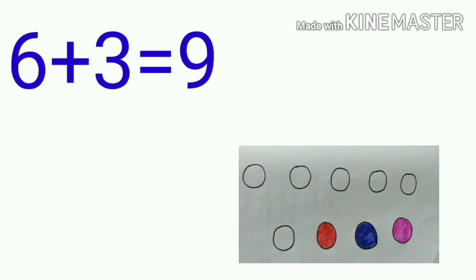Here you can see, out of 9 circles, 3 circles are shaded and 6 circles are unshaded. So we can add 6 plus 3 is equal to 9.